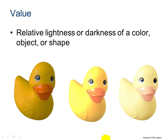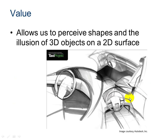Value refers to the lightness or darkness of a color. This rubber ducky on the left has more value than this rubber ducky on the right — sort of like transparency. Value allows us to perceive shapes and the illusion of 3D objects on a 2D surface. In this example, the artist has created a concept sketch of the interior of a vehicle. Shading, as we see here in this corner, provides the gradations of value that produce a 3D effect on a flat piece of paper.